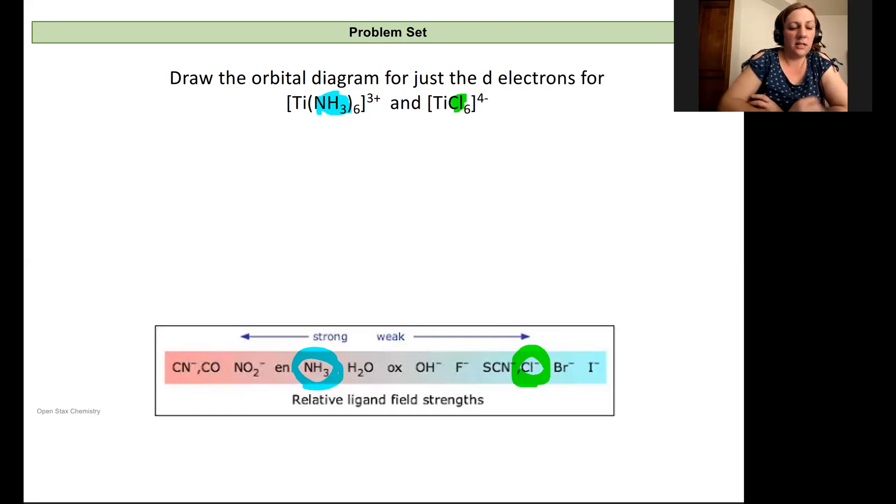So let's look at just the orbital diagram for the d electrons. We're typically used to drawing our 3d electrons for titanium, which is going to have an overall plus three charge, which will have one electron in it. And so we're going to now imagine having these ligands come around. And so this is just for the titanium plus three and what happens when they have different ligands associated with it.